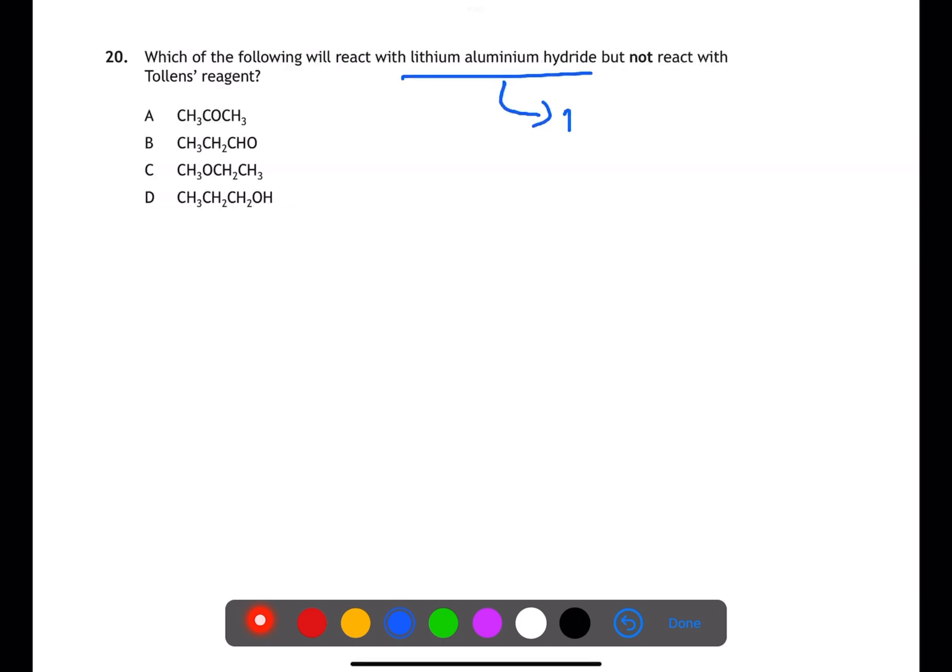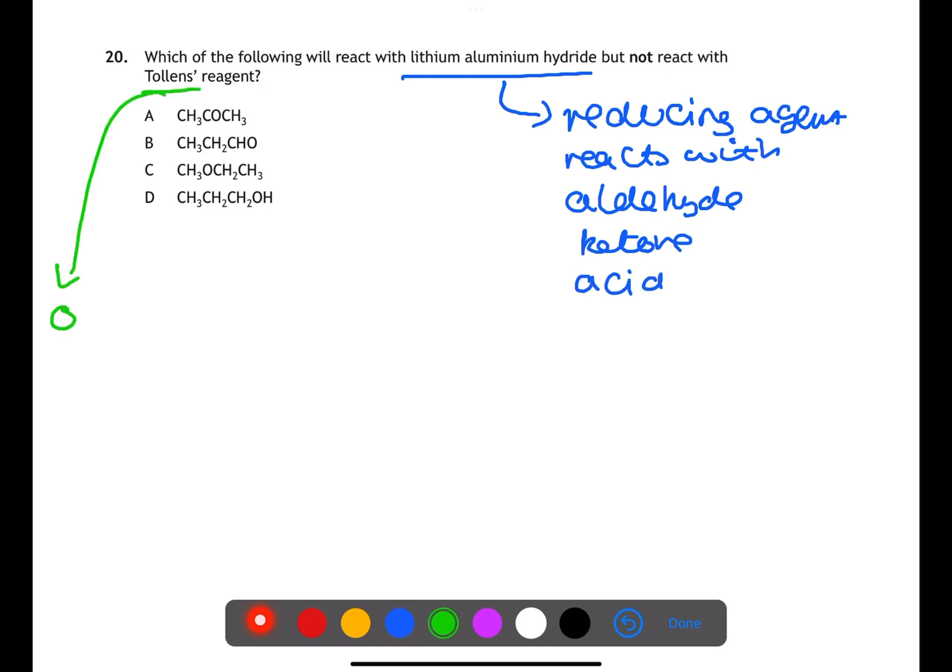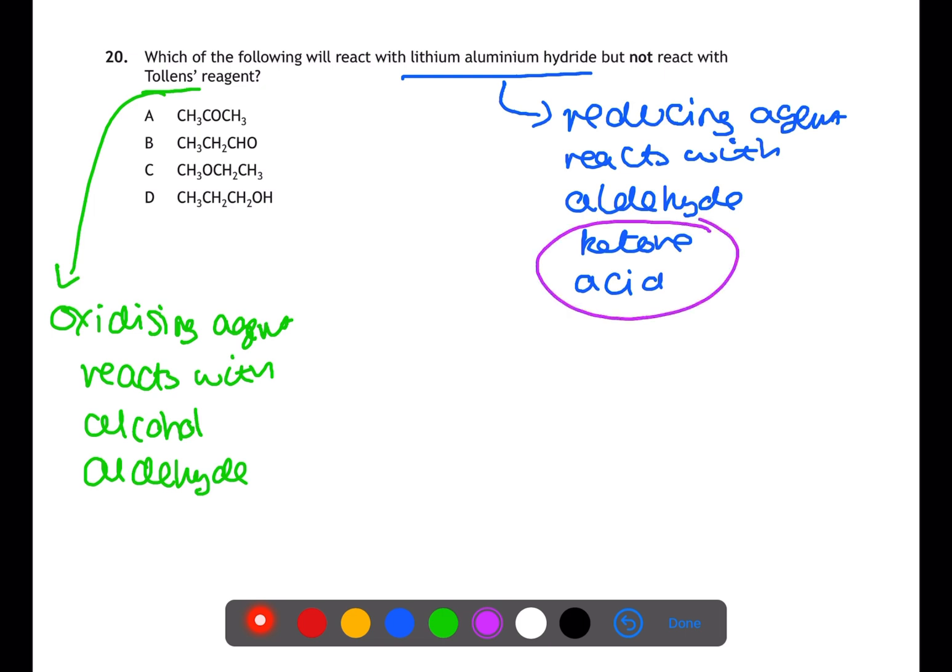Question 20 is another question about reactions. We're looking for something which will react with lithium aluminium hydride. Lithium aluminium hydride is a reducing agent. This will react with aldehydes, ketones and carboxylic acids. Tollens reagent is an oxidising agent. This will react with alcohols and aldehydes. Therefore the reactant that we're looking for needs to be either a ketone or a carboxylic acid. A is a ketone, propanone. B is an aldehyde, propanal. C is an ether, methoxyethane and D is an alcohol, propan-1-ol. Therefore A will react with lithium aluminium hydride to produce a secondary alcohol but will not react with Tollens reagent.